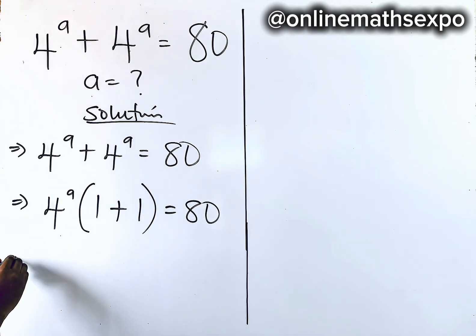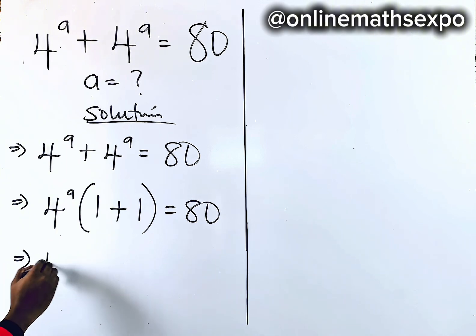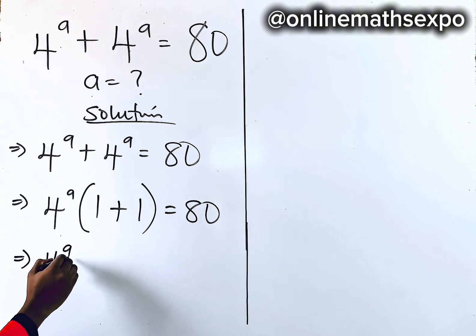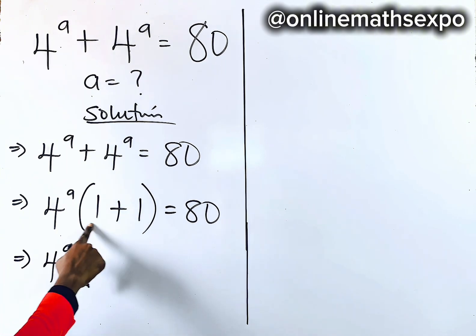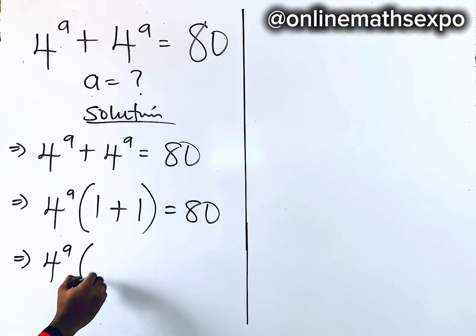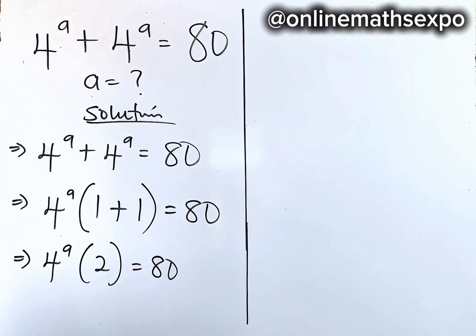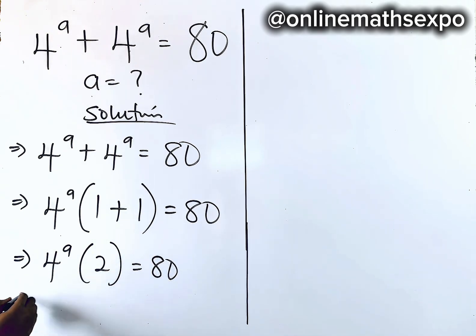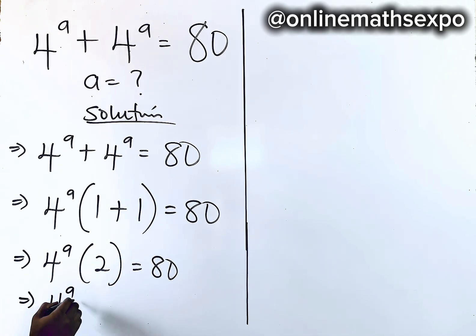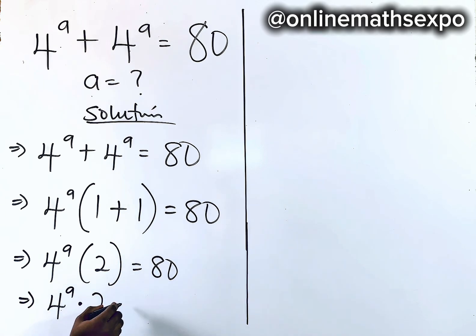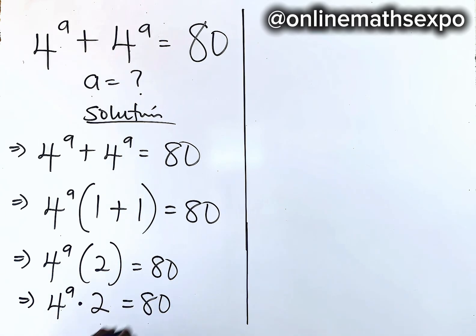Now solving this, we are going to have 4 to the power of 8. If you add 1 plus 1, it gives you 2. So this is equal to 80. Remember that this is the same as 4 to the power of 8 multiplied by 2 is equal to 80.